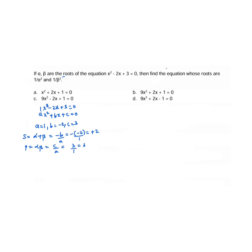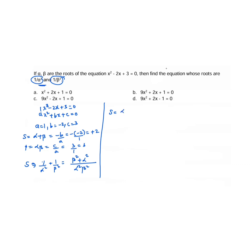Now, the equation whose roots are 1 by alpha squared and 1 by beta squared. We find the sum of the new roots: 1 by alpha squared plus 1 by beta squared. Taking LCM and cross-multiplying, this gives beta squared plus alpha squared divided by alpha squared beta squared, which is alpha squared plus beta squared divided by alpha beta whole squared.